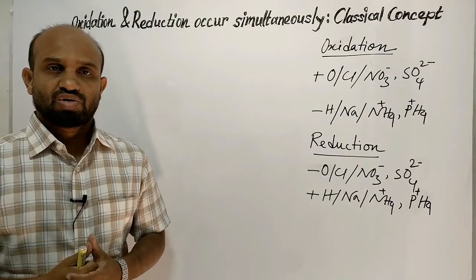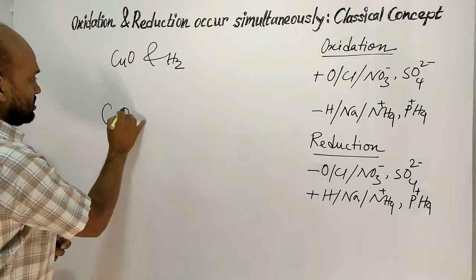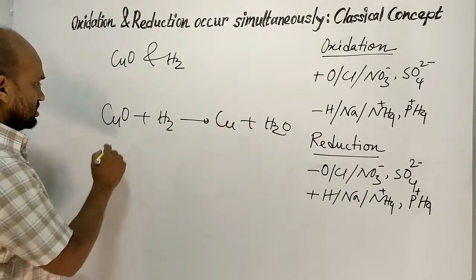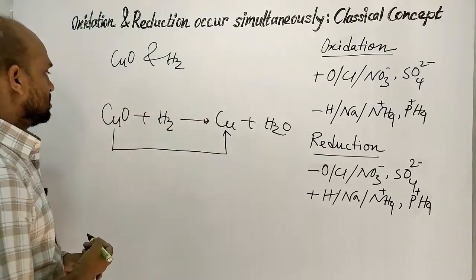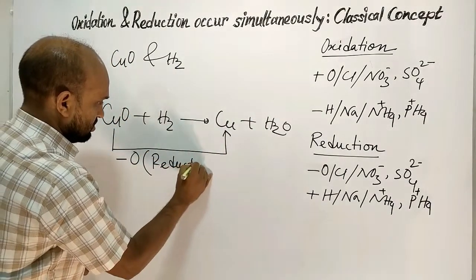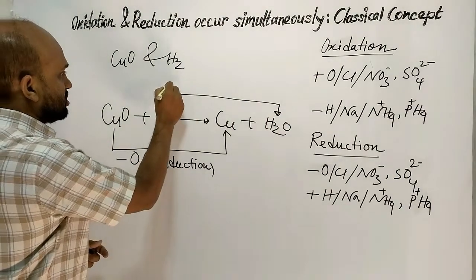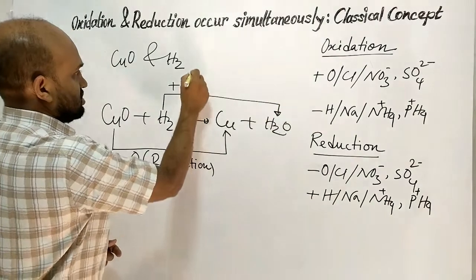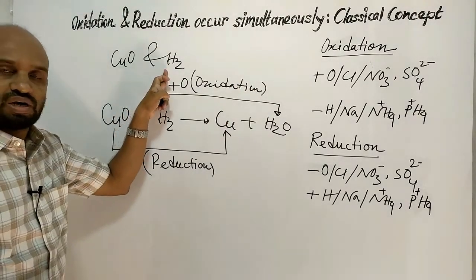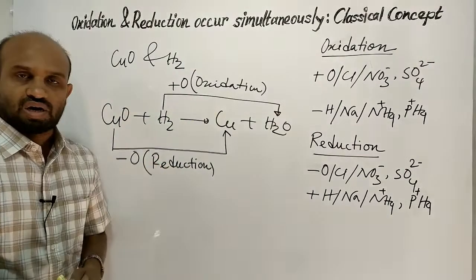Now the reaction between copper oxide and hydrogen. When copper oxide is added to hydrogen, copper and water are formed. In this reaction, copper oxide turns into copper after the removal of oxygen — removal of oxygen means reduction. And hydrogen turns into water after the addition of oxygen — addition of oxygen means oxidation. So this reaction is one in which oxidation and reduction happen simultaneously.